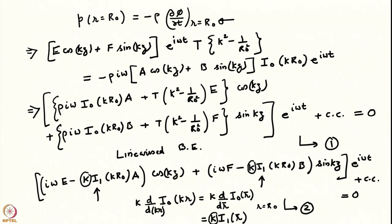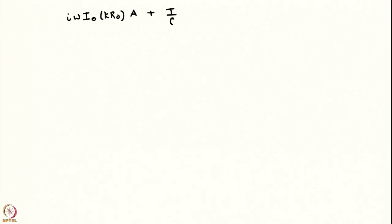Those are my two equations, Equation 1 and Equation 2. Like before, we set the coefficients of sin and cos in both equations to zero, leaving four equations in four unknowns: a, b, e, and f. These are linear homogeneous equations. Writing them as a matrix equation with unknowns (a, b, e, f) set equal to zero, and requiring non-trivial solutions, the determinant of the matrix must equal zero. From Equation 1: iω I0(kR0) · a + (T/ρ)(k² − 1/R0²) · e = 0. This gives the dispersion relation.